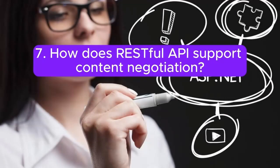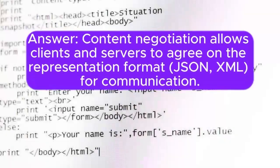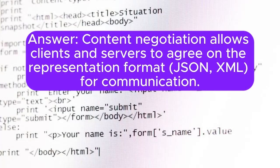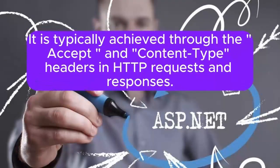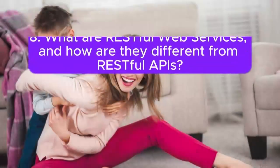Question 7: How does a RESTful API support content negotiation? Content negotiation allows clients and servers to agree on the representation format (JSON, XML) for communication. It is typically achieved through the Accept and Content-Type headers in HTTP requests and responses.